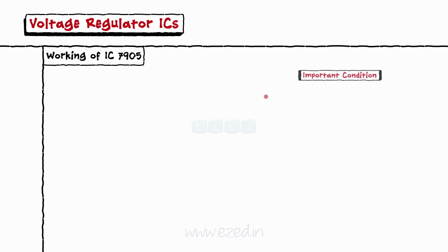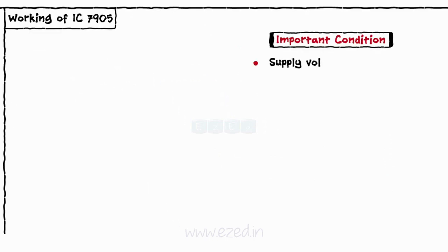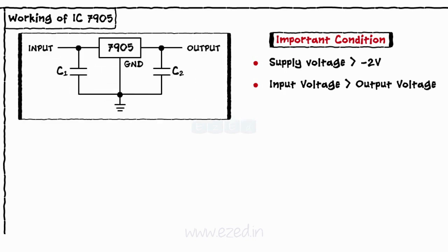Let's study their working now. The supply voltage of regulator IC must be greater than minus 2 volts, or the input voltage applied must be greater than the expected output voltage. This IC also has three terminals as input, ground and output.